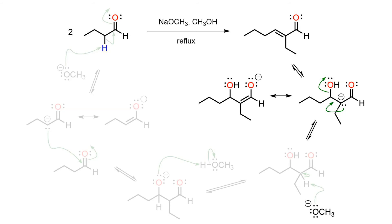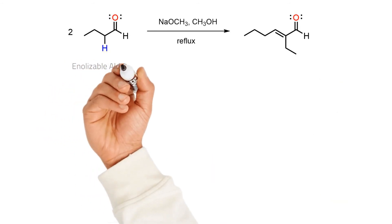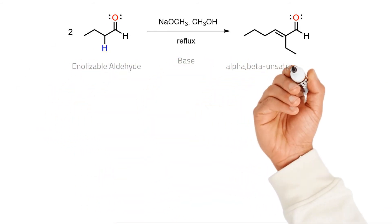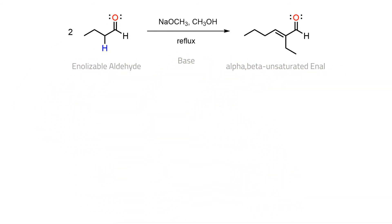To summarize, when an enolizable aldehyde or ketone is treated with a base of appropriate strength, the aldol addition occurs to give a beta-hydroxy aldehyde or ketone through nucleophilic addition. Prolonged heating in the basic environment affects elimination to give the conjugated alpha-beta unsaturated derivative.